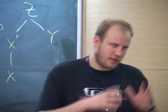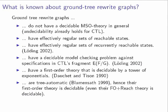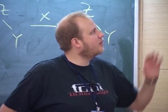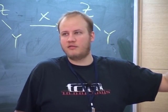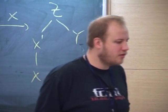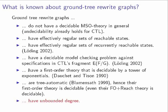Moreover, their first-order theory plus reachability is decidable — if you look at ground tree rewrite graphs with a reachability relation as a plug-in predicate, the first-order theory is also decidable. On the other hand, these graphs have unbounded degree — the degree is finite but unbounded. There is a result that says if you have a tree automatic graph with additionally bounded degree, the first-order theory is elementarily decidable. But in our setting these graphs do not have bounded degree, so one needs a different approach to decide the first-order theory in elementary time.